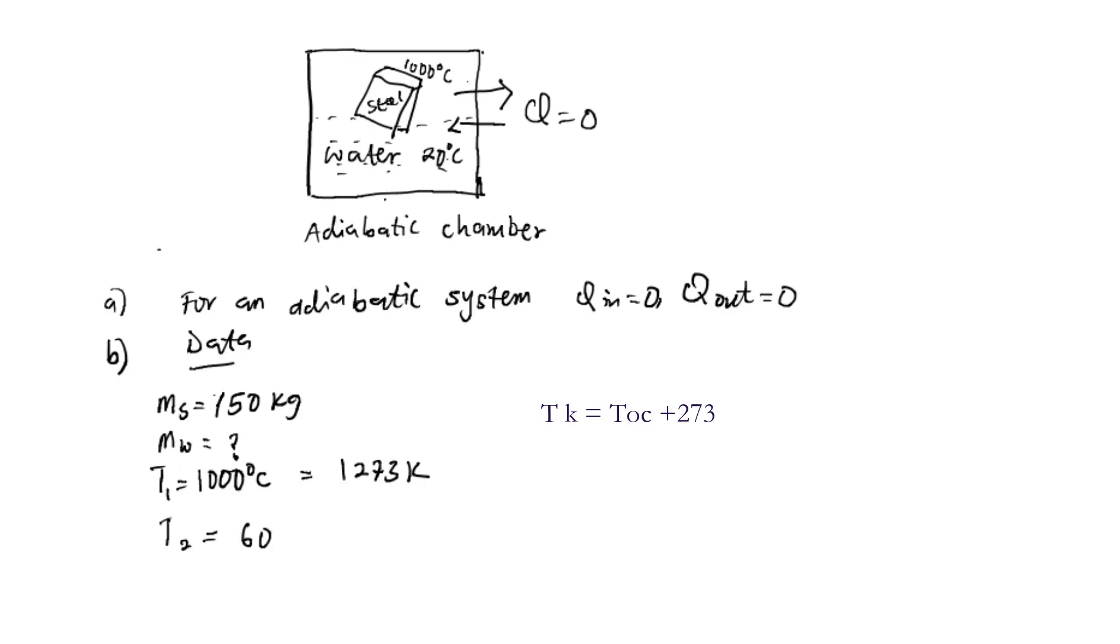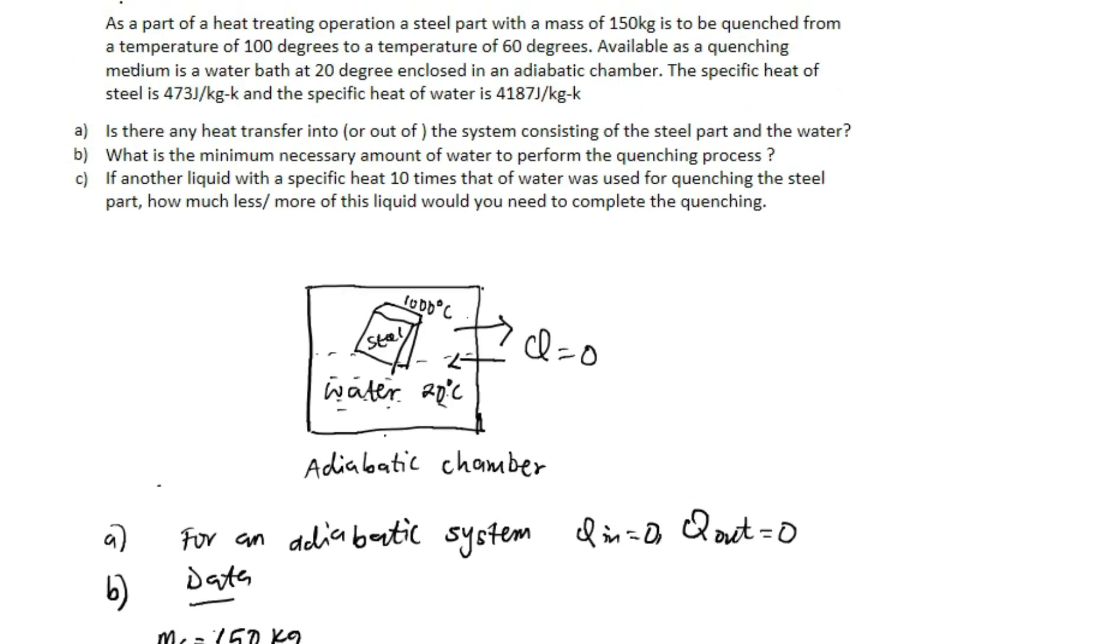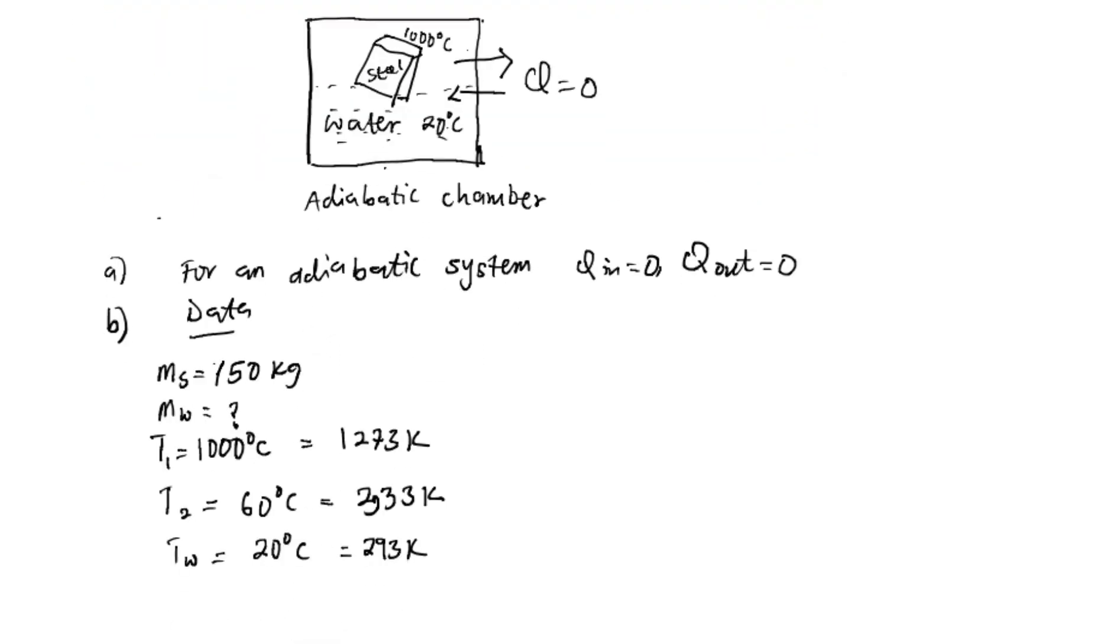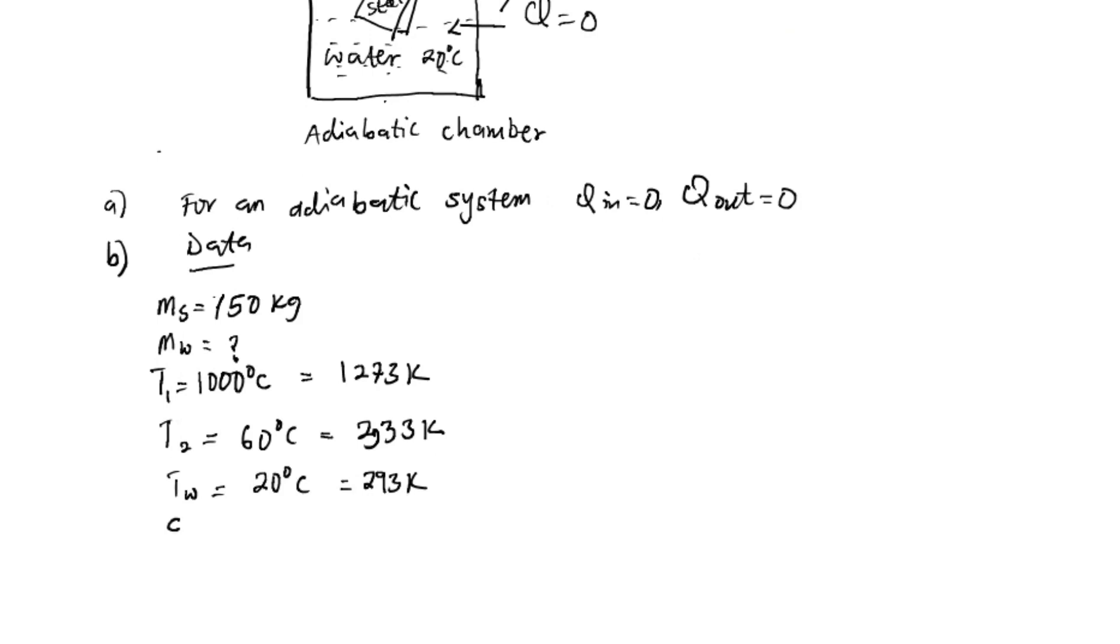The final temperature is 60 degrees, which is equivalent to 333 Kelvin. The temperature of the water is 20 degrees, which is 293 Kelvin. From the question we are given specific heat capacity both for the water and also for the steel.